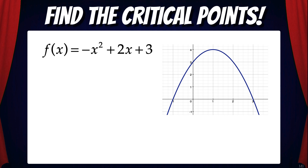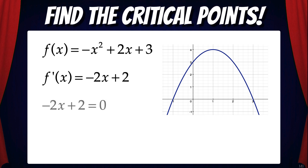Let's do an example. Find the critical points of f(x) = -x² + 2x + 3. The first thing we're going to do is take the derivative: f'(x) = -2x + 2. Now remember, a critical point is where the derivative is zero or does not exist. So let's set the derivative equal to zero and solve for x. After doing some algebra, we get x = 1.